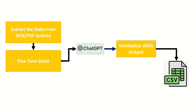After extraction, we have to fine-tune our input before sending it to ChatGPT. If you place raw input into ChatGPT, you will never get the expected output. Fine-tuning is a very important step — that's why don't skip the video. After fine-tuning, your input will connect directly with ChatGPT.